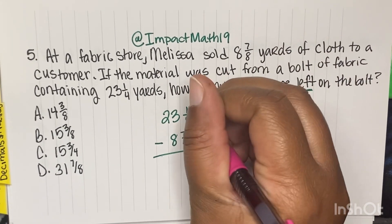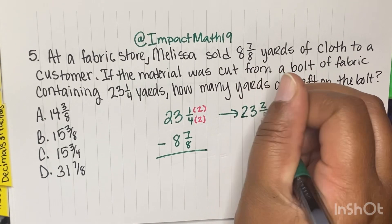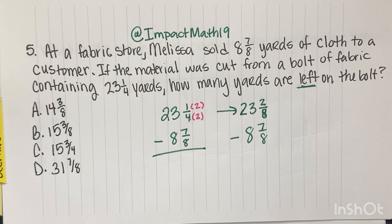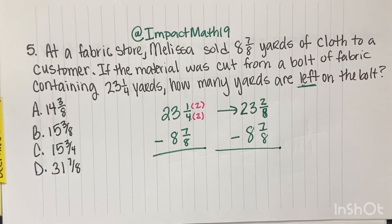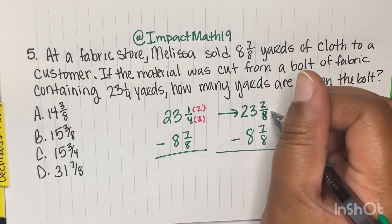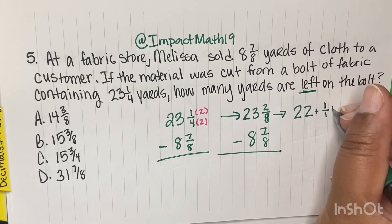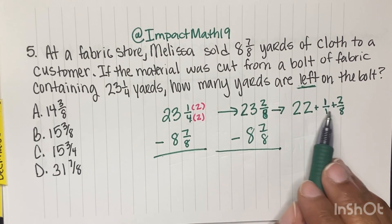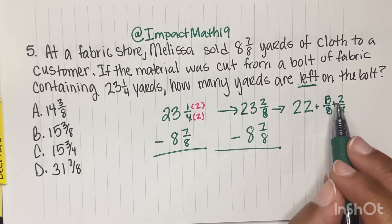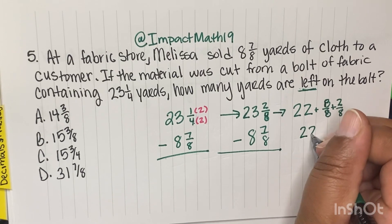We're going to do that by multiplying by 2. So we rewrite as 23 and 2 eighths minus 8 and 7 eighths. Now we still have a problem because we cannot take 7 away from 2. So we're going to borrow a 1 from the 23, making it 22. The 1 we borrowed becomes 8 over 8. Then we add that to the 2 eighths: 8 plus 2 gives us 10. So really we have 22 and 10 eighths, minus 8 and 7 eighths.